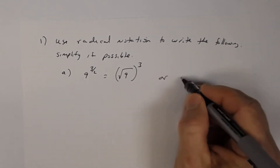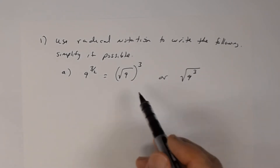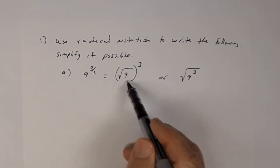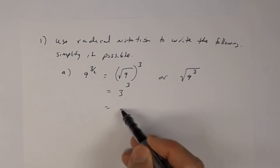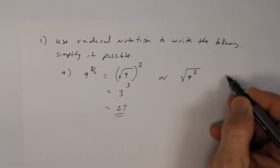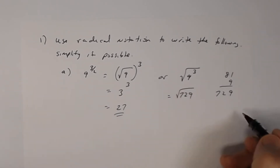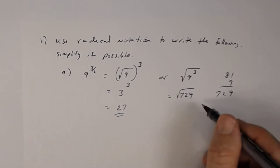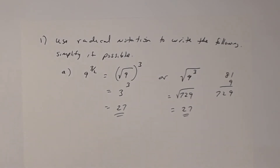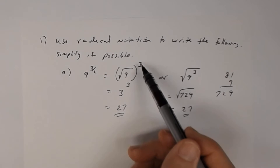If you had put the exponent inside instead, you'd have to figure out 9 times 9 times 9 first, which is 729, and then take the square root of 729 — which is 27, but that's not easy to figure out without a calculator. The point is: it is always easier to put the numerator on the outside.